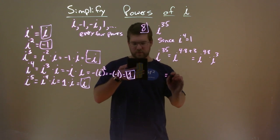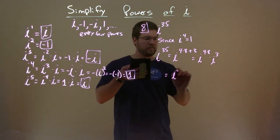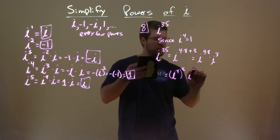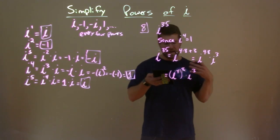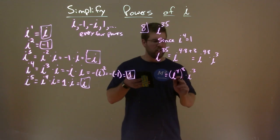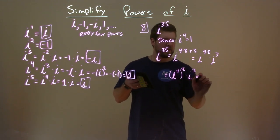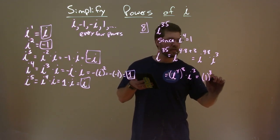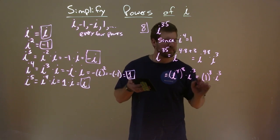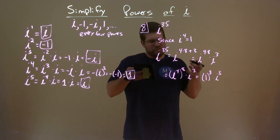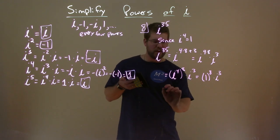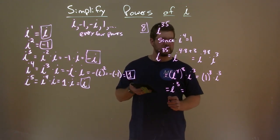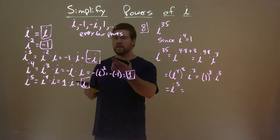We can rewrite this as i to the four times eight power times i to the third power, using our rules with exponents. Then we rewrite it as i to the fourth power, all to the eighth power, times i to the third power. I to the fourth power is one, so we have one to the eighth power times i to the third. One to the eighth is just one, so we're left with i to the third power, which we found to be negative i.